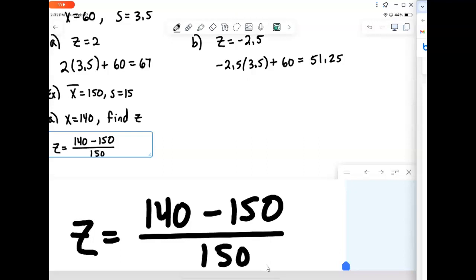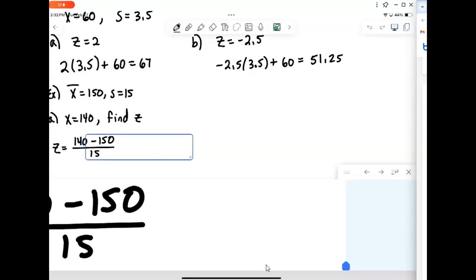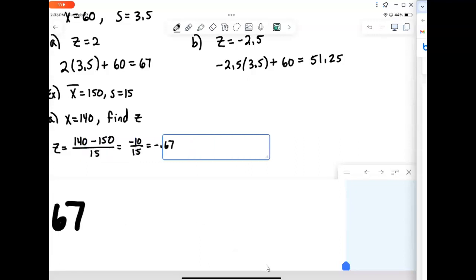So remember the formula is simply data value minus the mean divided by the standard deviation. So work that out. 140 minus 150 would be negative 10 divided by 15. We get a negative 0.67. So our z-score is negative 0.67, 0.67 standard deviations below the mean.